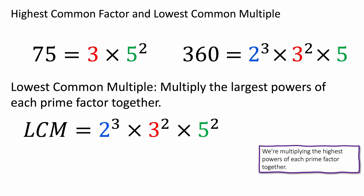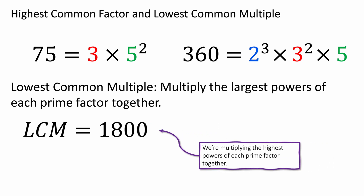The lowest common multiple is found by choosing the highest power of each prime. So we choose 2 to the power of 3 because the highest power of 2 is 3. We choose 3 squared because the highest power of 3 is 2. Then we write 5 squared because the highest power of 5 is 5 squared. When we multiply those together we get 1,800 — you can use your calculator for that. That is how you find the highest common factor and lowest common multiple. If you would like more on that, I have a video linked at the top of the screen and in the description.